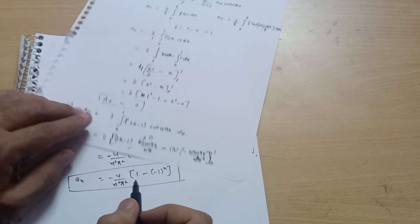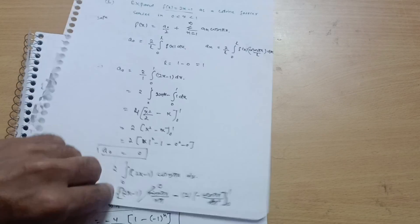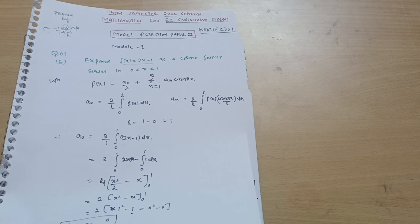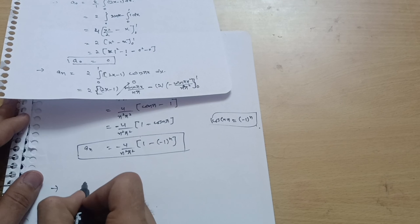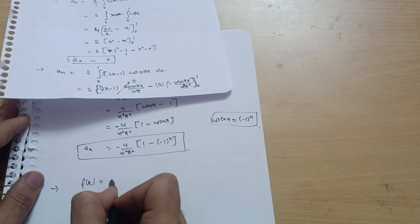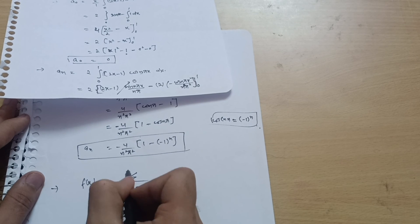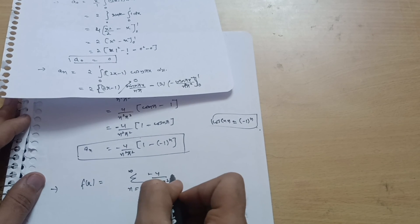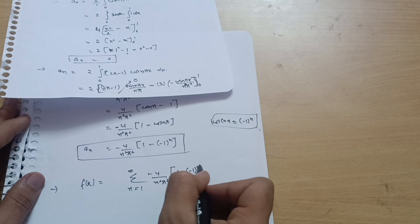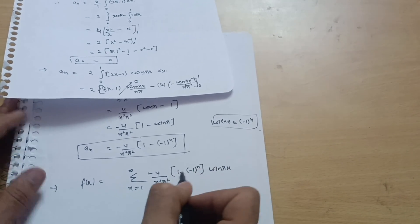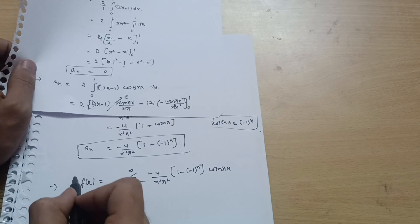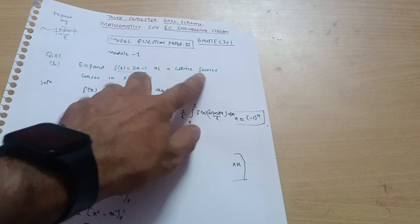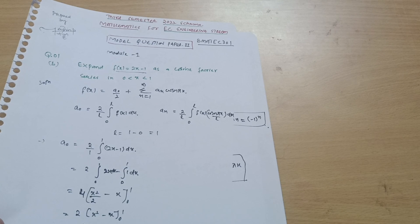Now putting a₀ and aₙ into the Fourier series expansion: f(x) = a₀/2 + summation of aₙ cos(nπx). Since a₀ = 0, the final cosine Fourier series is f(x) = summation from n=1 to infinity of [−4/(n²π²)(1 − (−1)ⁿ)] cos(nπx). This is the cosine Fourier series for the interval 0 < x < 1.